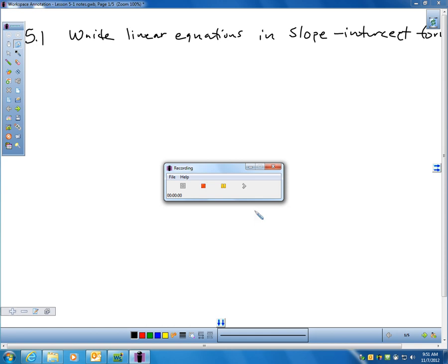Chapter 5 is just the reverse. Chapter 5 is giving us maybe a graph or some information, and they want us to write the equation, almost in the reverse process of what we did in chapter 4.